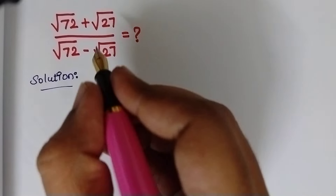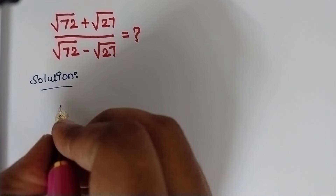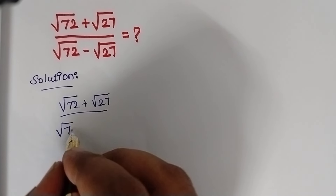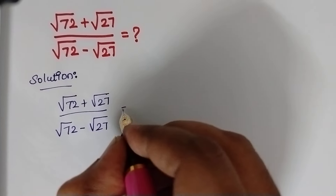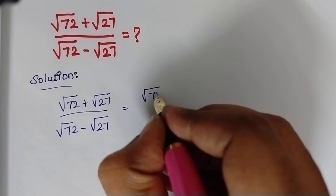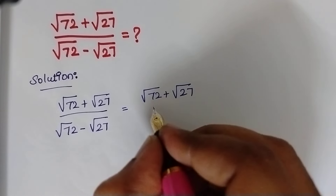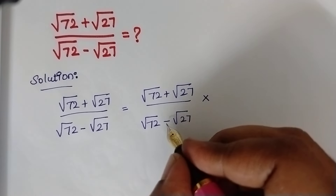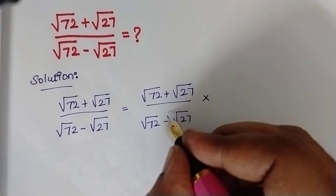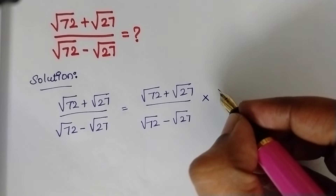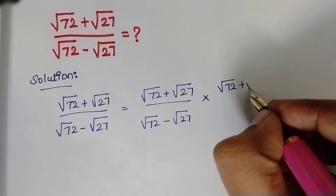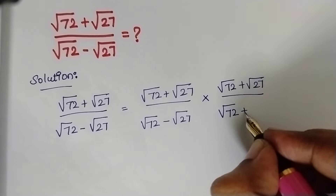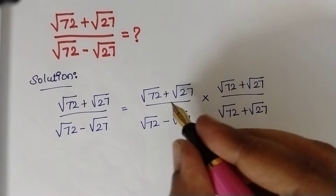The solution for this question is: first we need to take the conjugate. Therefore, (√72 + √27) / (√72 - √27) is equal to (√72 + √27) / (√72 - √27) multiplied by — just change the sign inside the denominator and write it in the numerator — divided by (√72 + √27) / (√72 + √27).